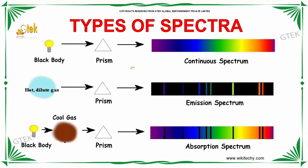If you talk about the types of spectra: a black body which is passed through a prism gives a continuous spectrum. If it is a hot dilute gas, you get an emission spectrum. If light passes via a black body through a cool gas, you get an absorption spectrum. So these are the three varieties of spectrum — continuous, emission, and absorption spectrum.